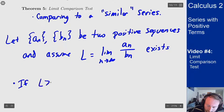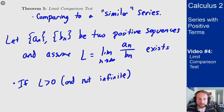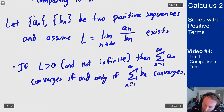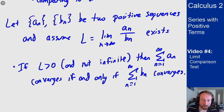If L is greater than zero and not infinite, then the series for a_n converges if and only if the series for b_n converges — they have the same behavior. This statement means I can go either way: if I know that a_n diverges, this tells me that b_n also diverges. They always have the same behavior — they always either both converge or both diverge.